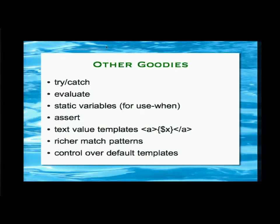We borrowed text value templates from XQuery, but we also changed the behavior: in XQuery, if $x is an element that will create a child element, but in XSLT it behaves exactly like it works in attribute values — we atomize the element and give you a string. So text value templates always give you a string expansion, which we decided was the less surprising way of it working.